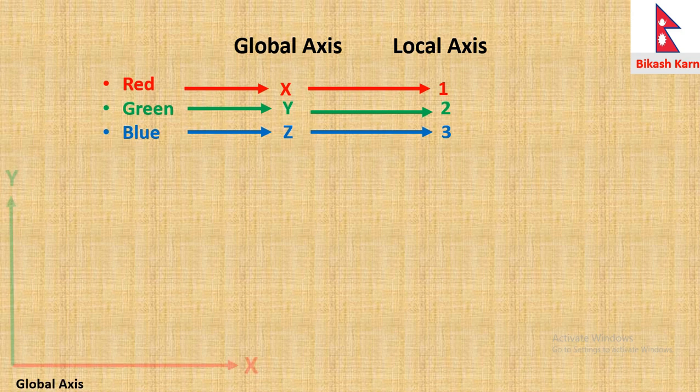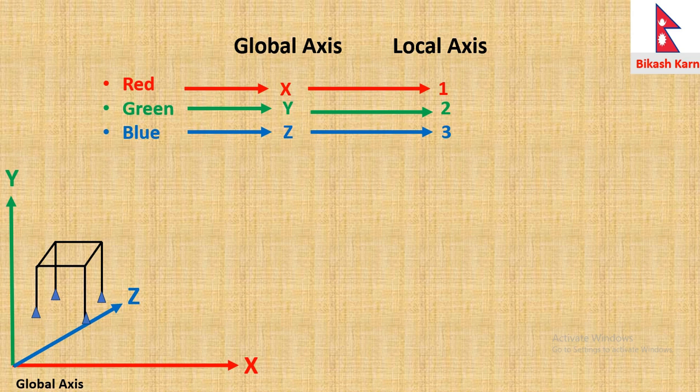For a structural frame with beam and column system shown in the figure, the x, y, z will be global axis for entire component of system, and each component of system will have their own local axis.